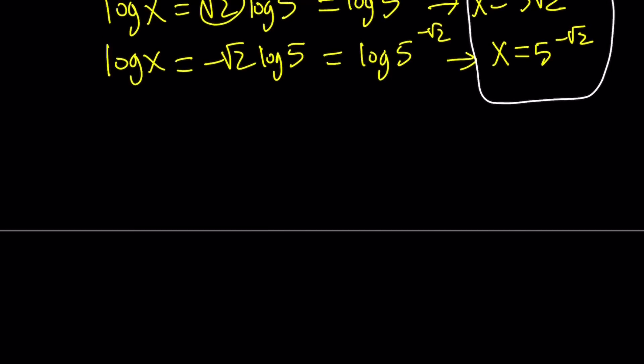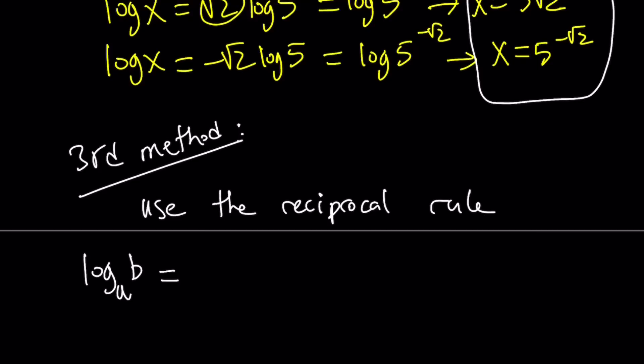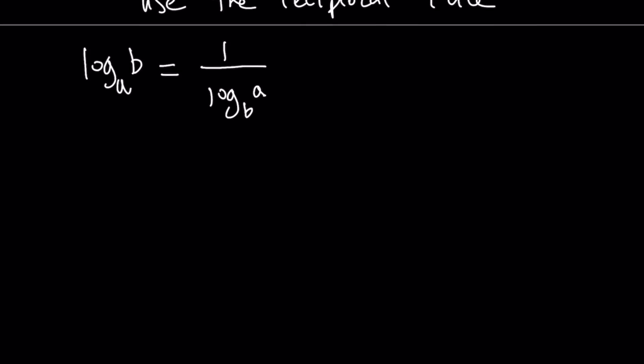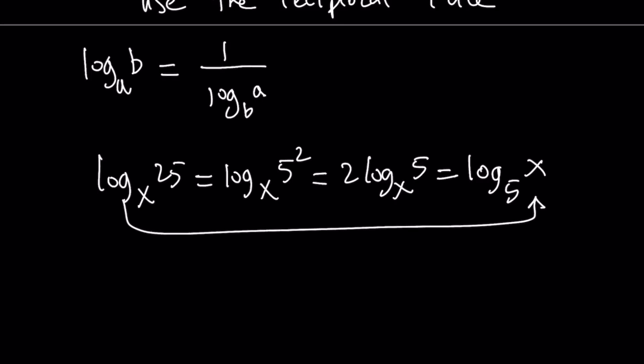Let's go ahead and talk about the third method. For the first method, we basically use substitution. For the second method, we use change of base. And for the third method, we're going to use the reciprocal rule. The reciprocal rule works like this: if you have log b with base a, then it can be written as 1 over log a with base b. That's what we're going to use. So let's go ahead and do the following. Log 25 with base x can be written as log 5 squared, and then that is 2 times log 5 with base x. And then that is equal to log x with base 5. These two are equal, which is kind of cool because we can use the reciprocal property.